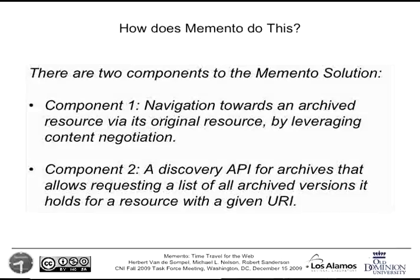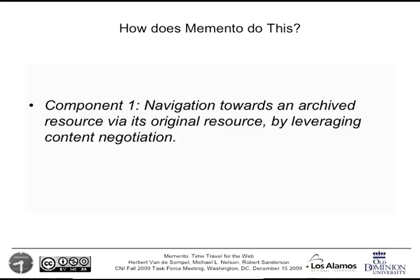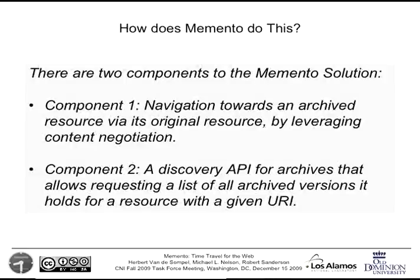Here's how we do this — two components to the solution. The first and more fundamental: to get to an archived resource, talk to the URI of the original resource and use content negotiation to get archived versions. The second is a discovery API, which allows us to ask any archive: for a given URI, what archived versions do you have and at what date-times were they archived?